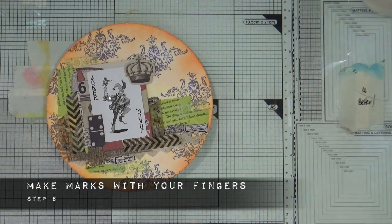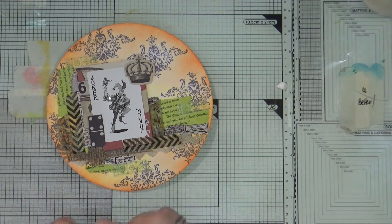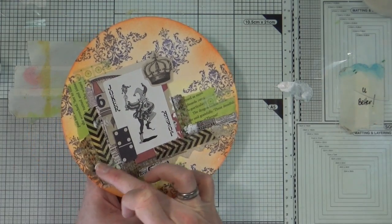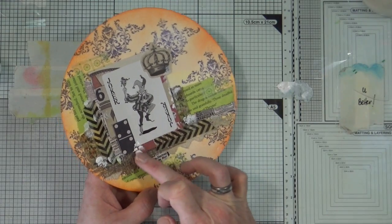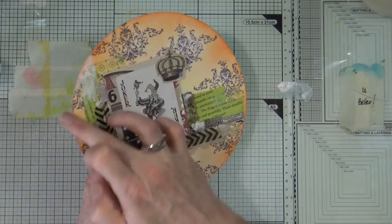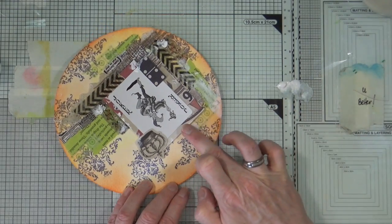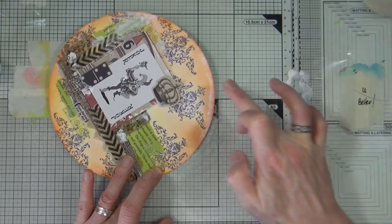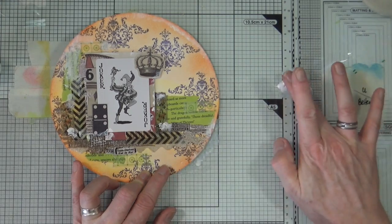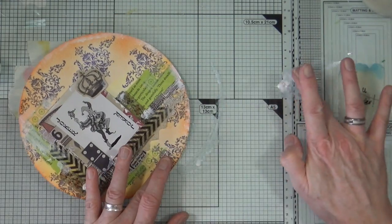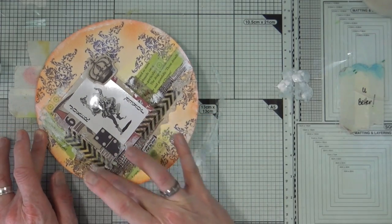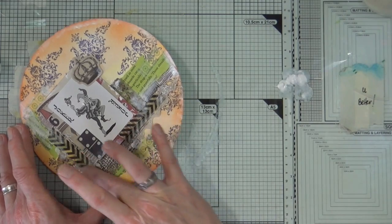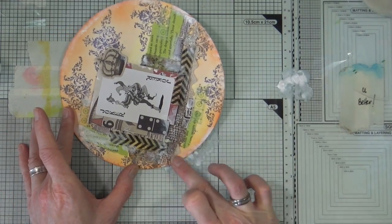So step number six is to make marks with your fingers. For that I have some white acrylic paint, it's the Dina Wakeley Media acrylic paint and just using the tip of my finger I'm going to add some blobs of white around the page just to add a little bit of relief from all that colour and also I'm going to create just a nice white grungy smudgy kind of background or border around the entire page.